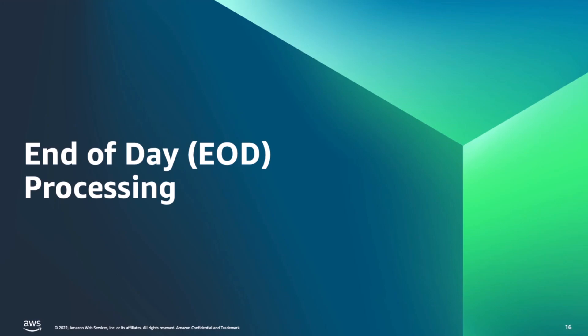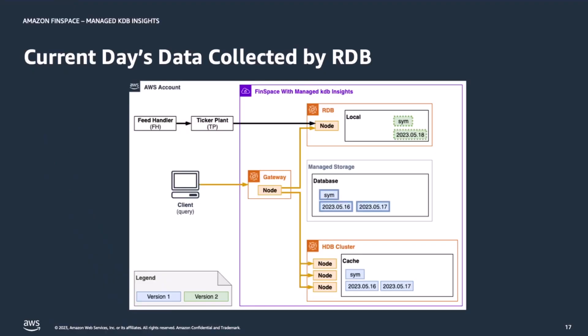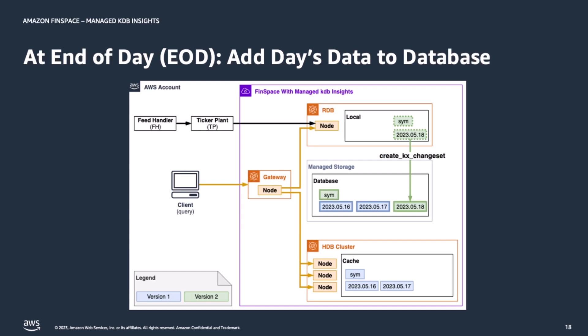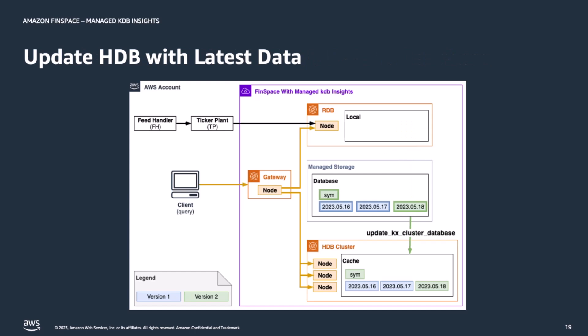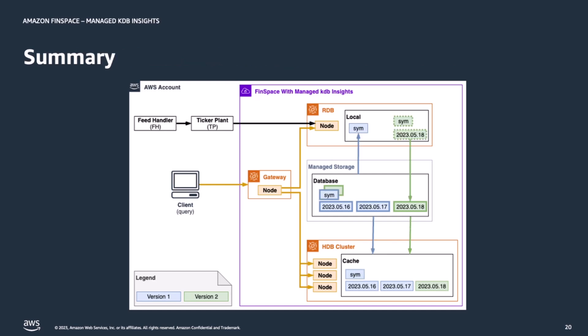Now we will demonstrate end-of-day processing of the data in our basic tick architecture. We have the RDB, which has been subscribing to the ticker plant and collecting data. At the end of the day, the RDB will save its in-memory data — denoted in green — saving both an updated SIM file and a new date of data. We will call this version 2 of the data. To add this new version of data to the database, we will call Create KX Chainset. The chainset of data is added to the basic tick managed database, creating a version 2 of the database. Then, by calling Update KX Cluster Database, the database version of the HDB's cache is updated to reflect the new version 2. So, in summary, our clusters started with version 1, the RDB collected data throughout the day, and then at the end of the day we first added the version 2 data to the basic tick managed database and then updated the cluster to this new version.